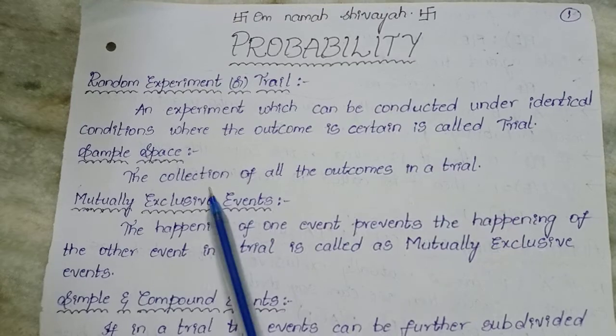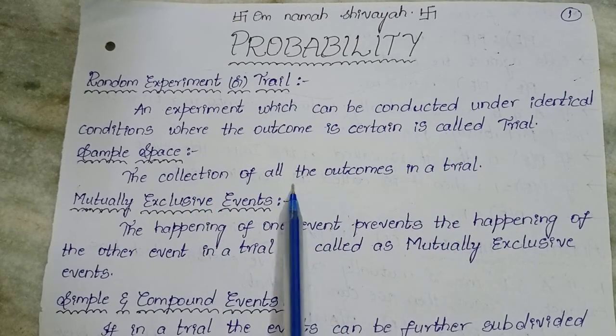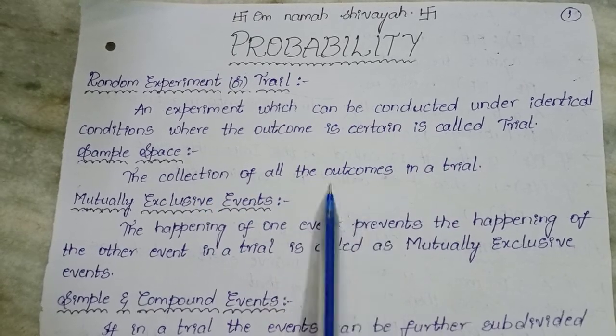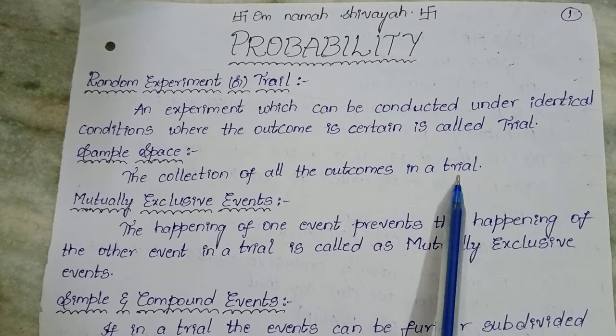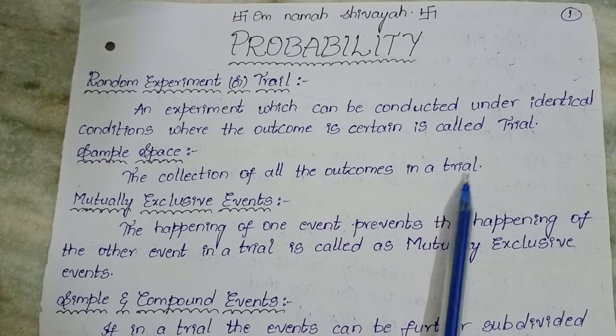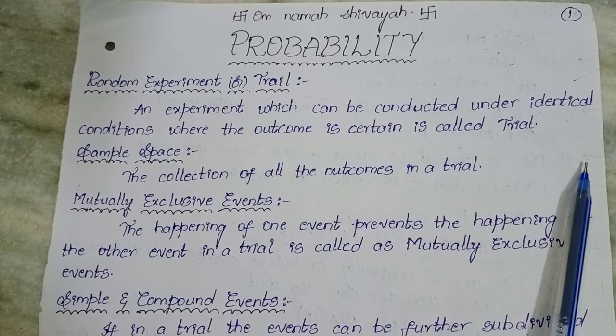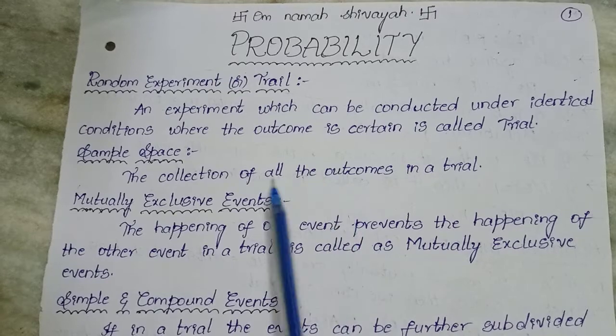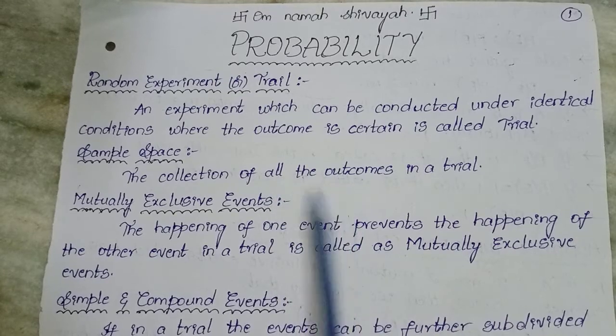Sample space. The collection of all the outcomes in a trial is known as sample space. Head and tail, in case of a coin, is a sample space.